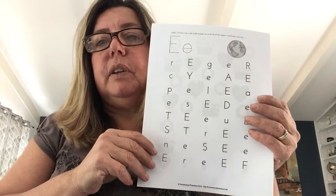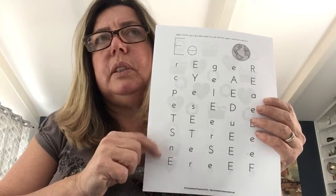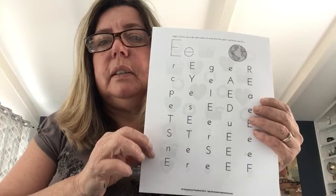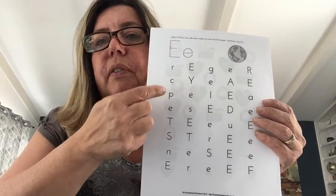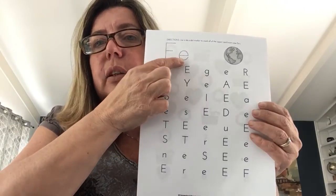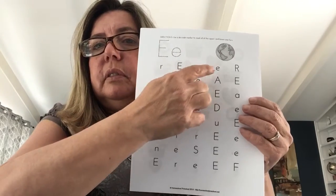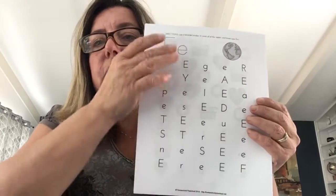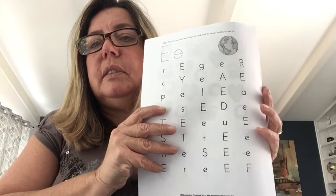For the older children — actually I think I included this for everybody, I'm sorry — they have to find the uppercase E and the lowercase e, circle every one they find, and after they're done they can count to see how many of each they have.